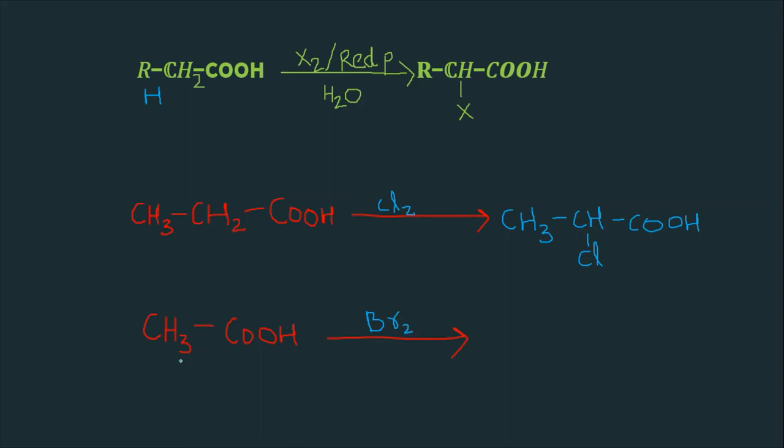Now here we have three alpha hydrogens. Here only two alpha hydrogens, but here we have three alpha hydrogens. Now write CH2 and replace one hydrogen with bromine. We are taking bromine here and COOH as same. Now it is alpha halogenated.